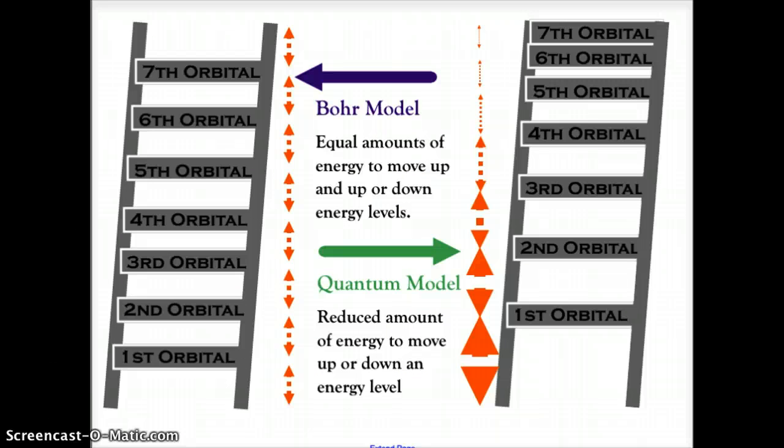One of the other things about the Bohr model is that as electrons move up or down or enter or leave an orbital energy level, it takes the same amount of energy to jump up or to go down an energy level. In order to jump up an energy level, the electron would have to gain energy. In order to drop down an energy level, the electron would have to lose energy. And in the Bohr model, it says that this energy value is exactly the same for every orbit.